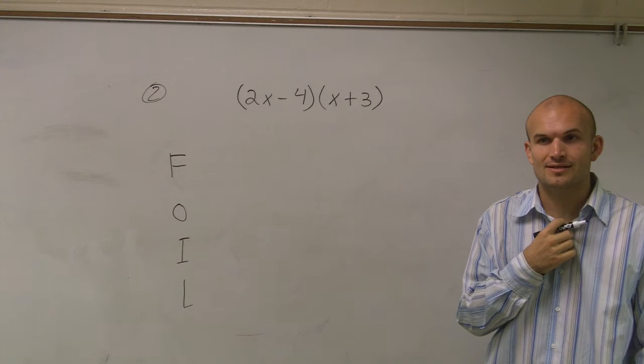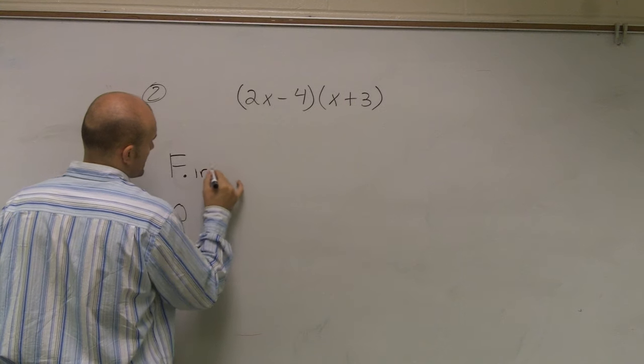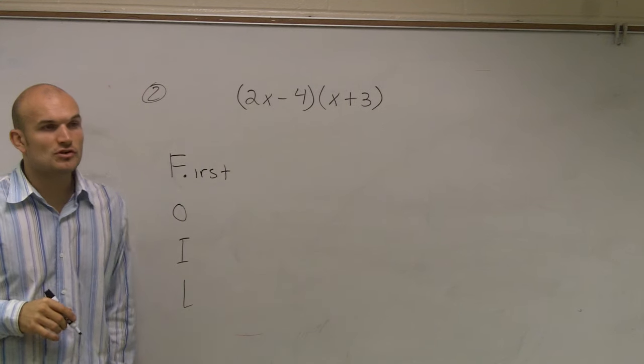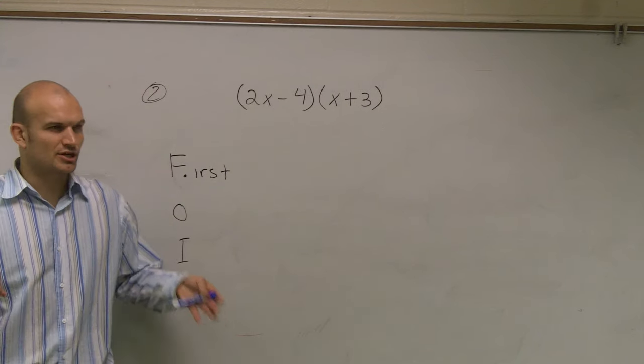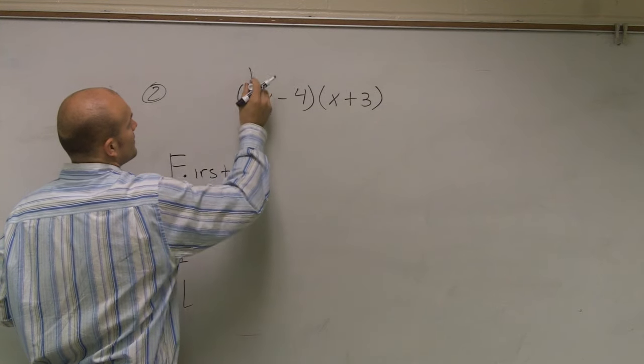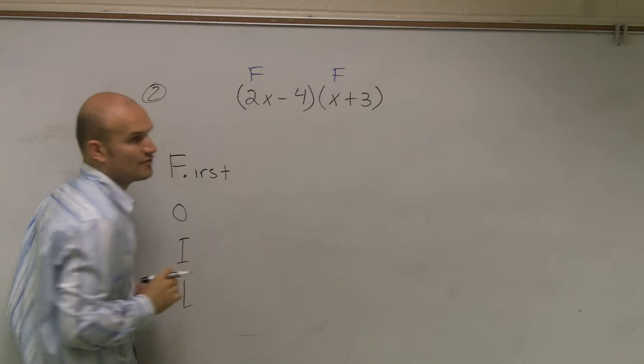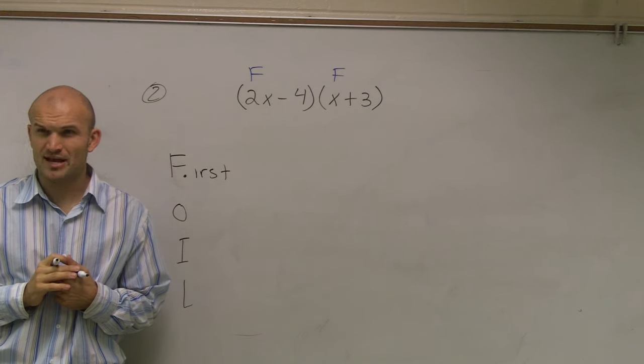What FOIL represents is F represents first. So what I want you to do is label the first two numbers in each binomial. When you're reading left to right, you can say that's the first number in this binomial, and that's the first number in that binomial. Does that make sense? F and F.